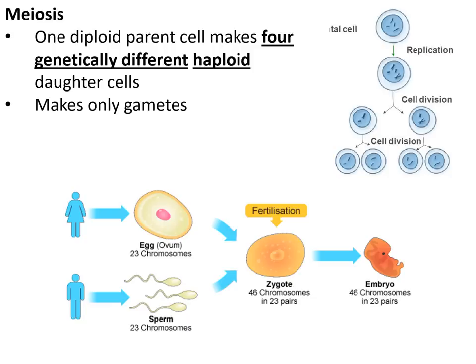Haploid cells are made by the process of meiosis, in which one diploid parent cell makes four genetically different haploid cells. This produces the gametes — your sperm cells and egg cells.